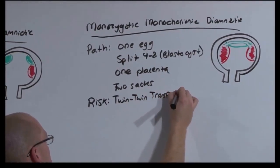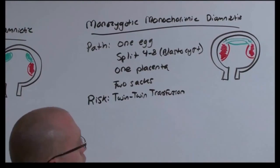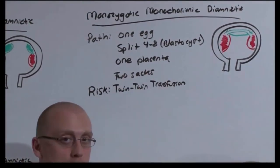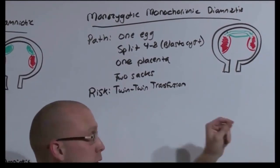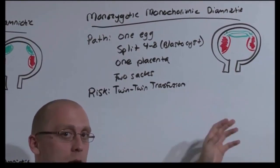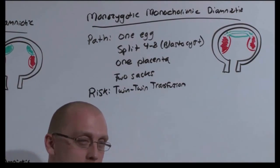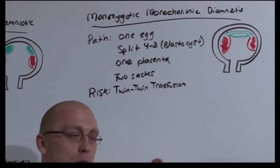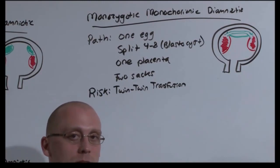Essentially, the placenta acts as a hose between the two of them. And in general, the twin that transfuses the other does better. Even though they come out anemic, and smaller, and lower birth weight, they do better than the bigger transfused fetus, because the one that got transfused has a higher bilirubin load to handle.